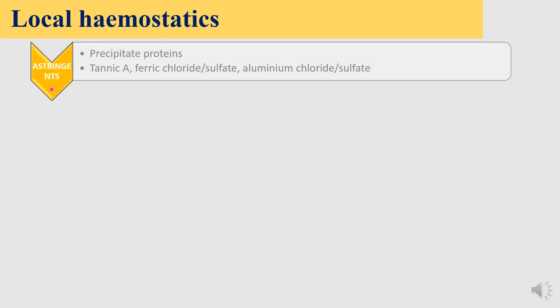Now let's deal in detail about each one of them — local hemostatics. The first one is the astringents. What do astringents do? They precipitate proteins at the local bleeding sites. Some examples are tannic acid, ferric chloride or sulfate, and aluminum chloride or aluminum sulfate.